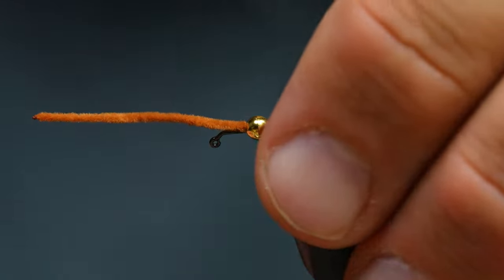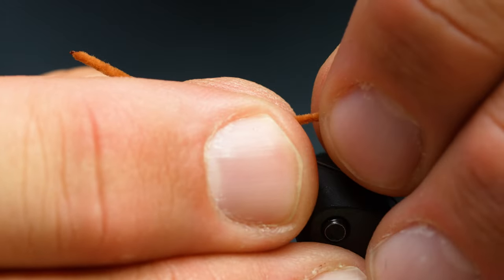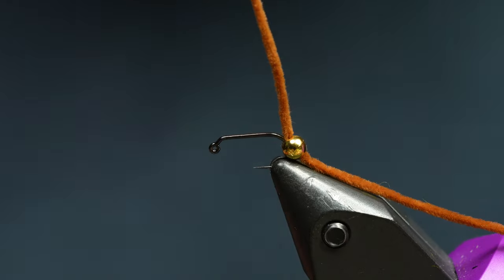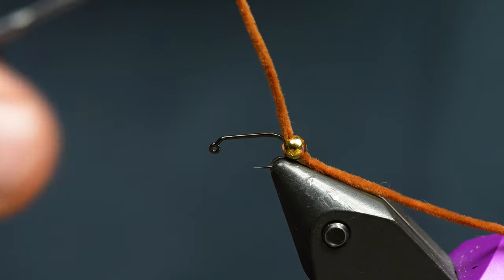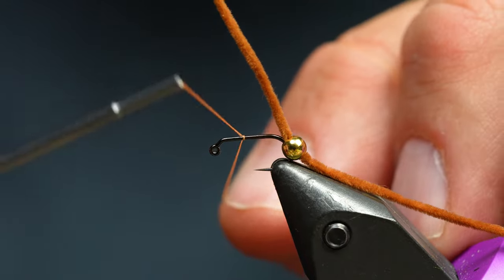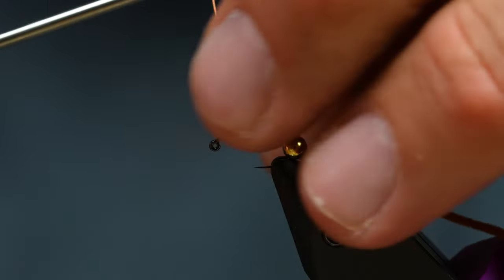Here we have the chenille on a hook. I want it to be roughly about that long, so I'm just going to push all that back here. I'm going to take some orange thread. This is fluorescent orange Semperfly 12 odd, I believe.